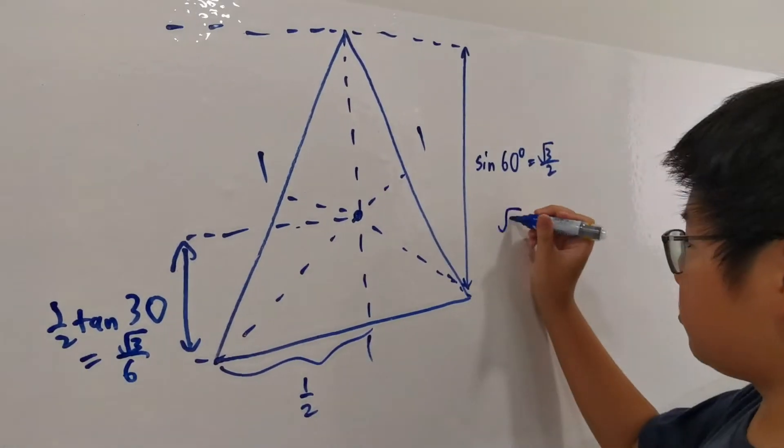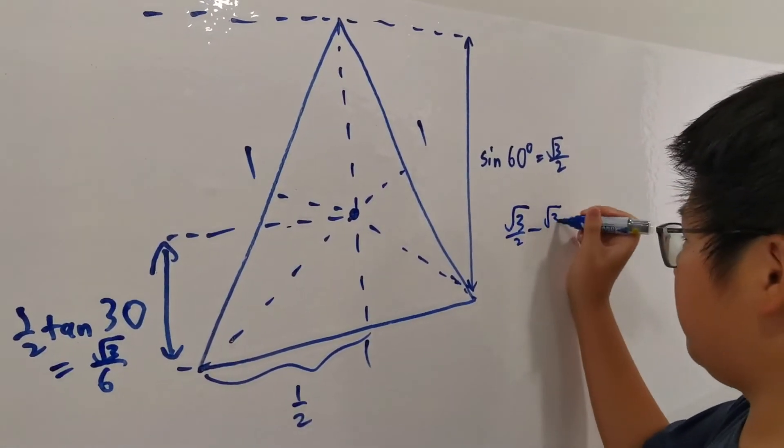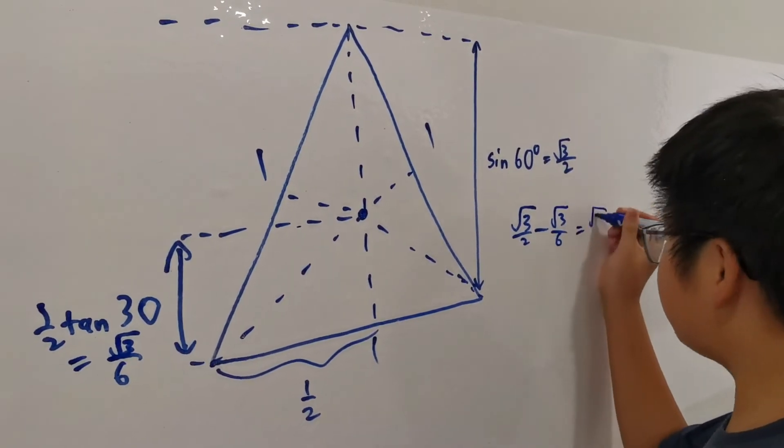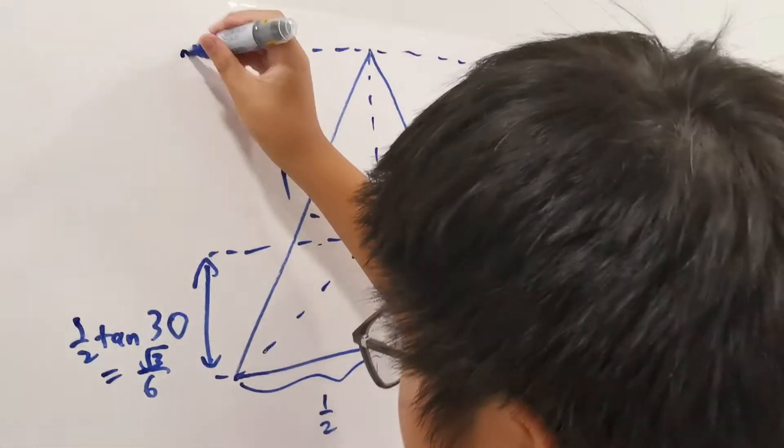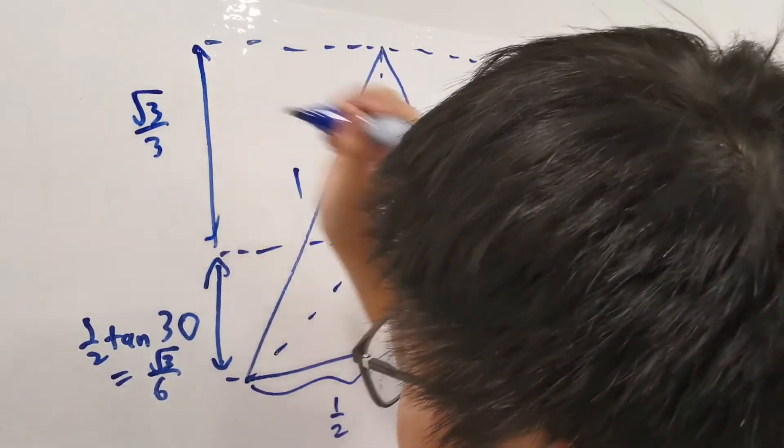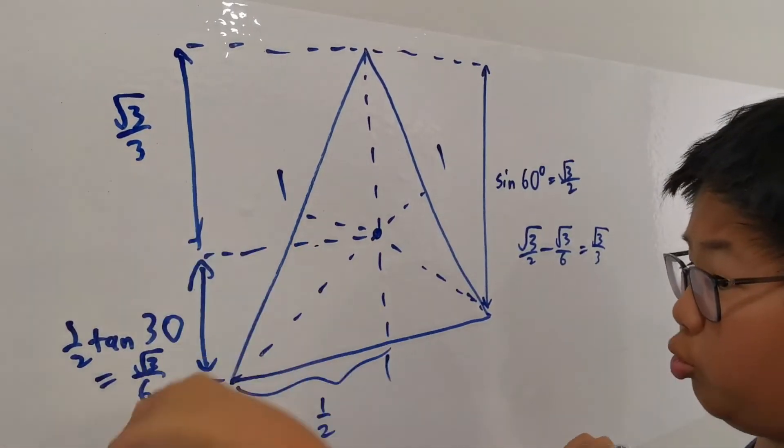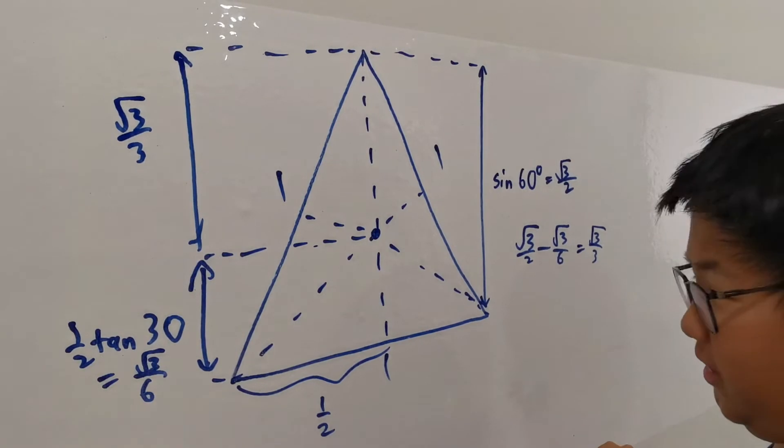So what's square root 3 over 2 minus square root 3 over 6? It is square root 3 over 3. So we'll write that here. Hey, look at it. This is exactly twice root 3 over 6.